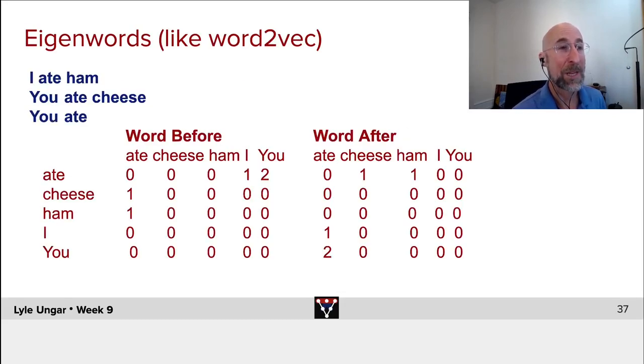If you look at I ate ham and you ate cheese, ham and cheese are distributionally similar. They show up in the same immediate context. I and you are very distributionally similar. They show up in the same sorts of contexts before the same sorts of words.